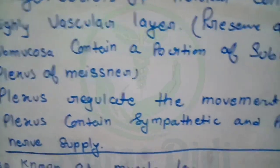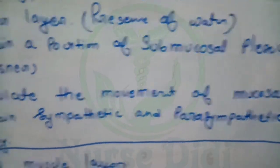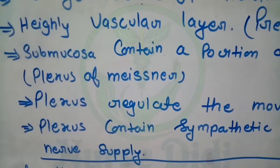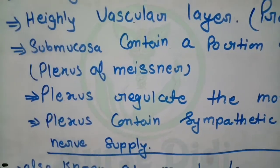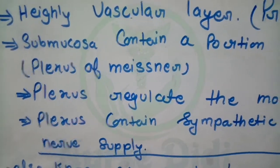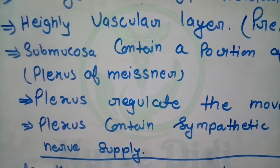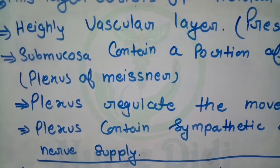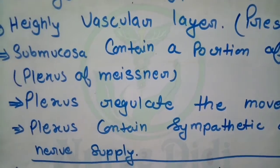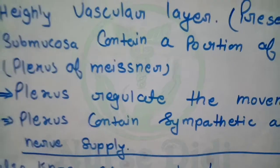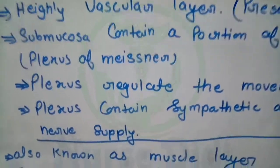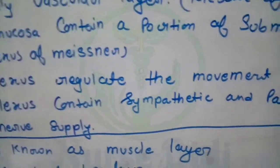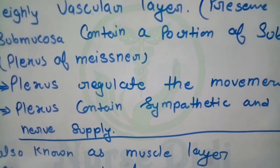Sub-mucosa contains a portion of the submucosal plexus - the plexus of Meissner. This is an important point, and I also ask about the plexus of Meissner many times. It is a bundle of nerves present here which maintains and controls movements and contractions. The plexus regulates the movement of the mucosa.